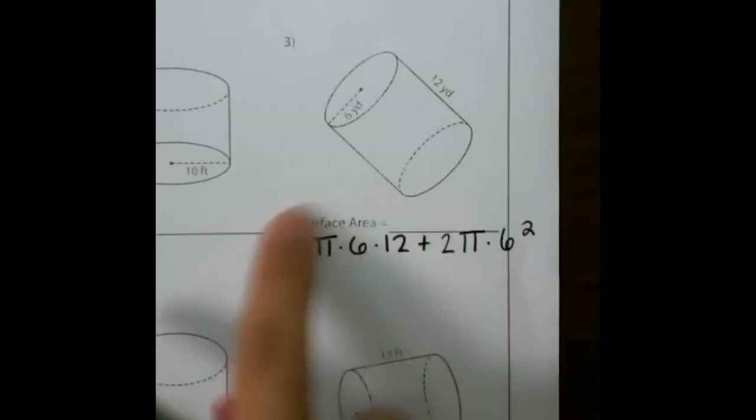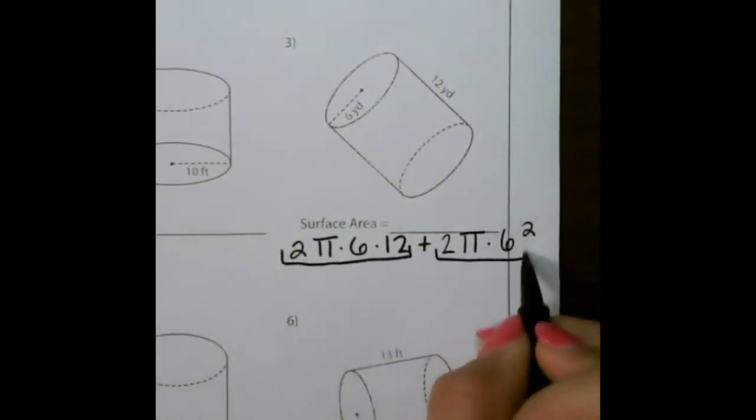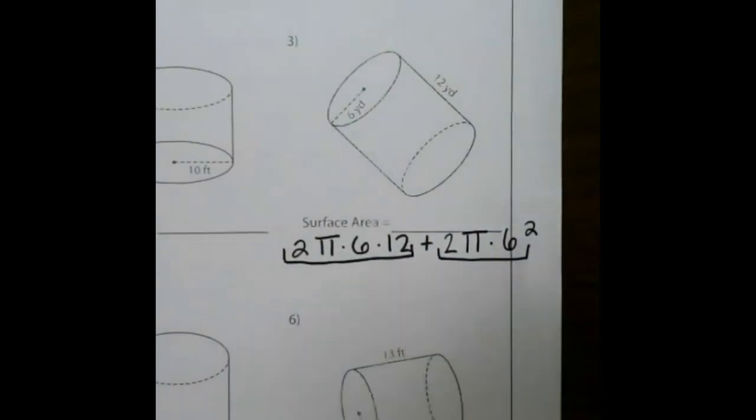So remember, when solving, solve this portion first, solve this portion second, and then add those two numbers together. See if you can solve that to get the final answer.